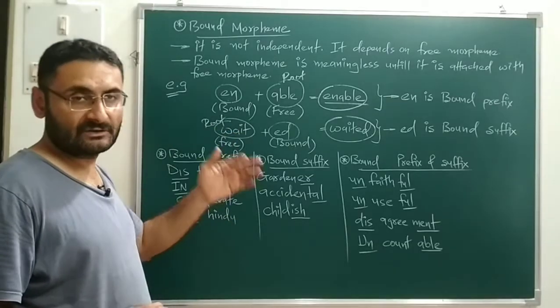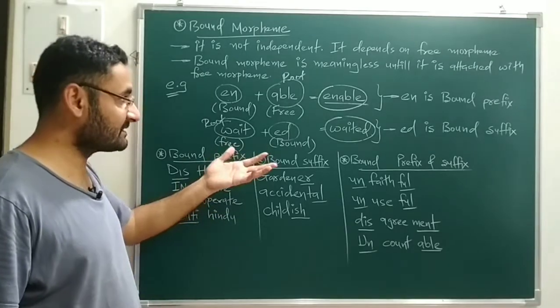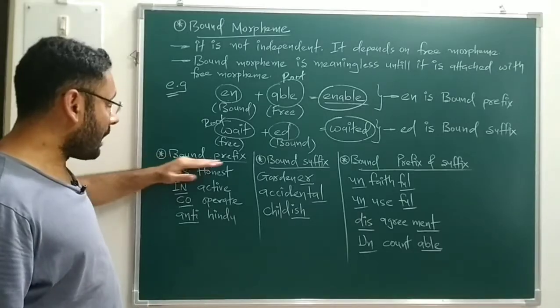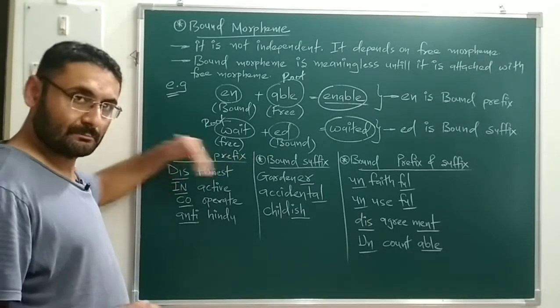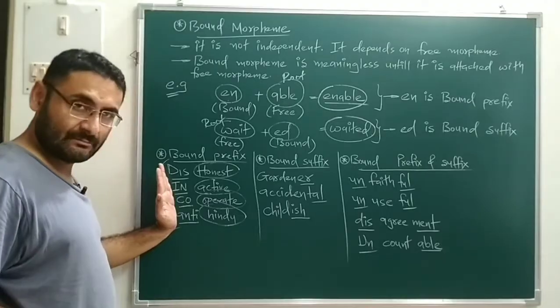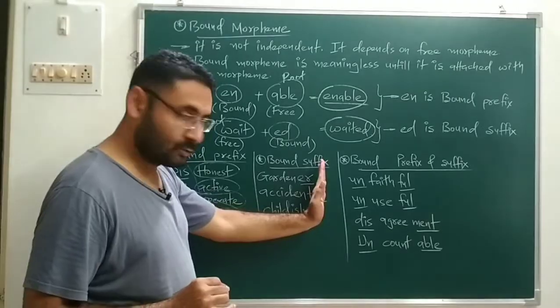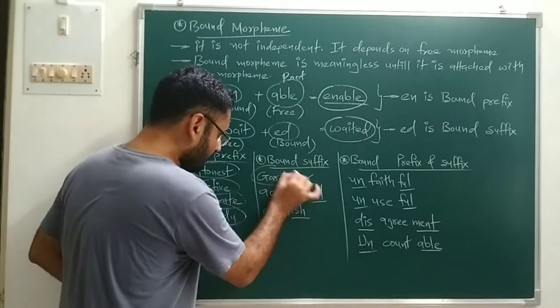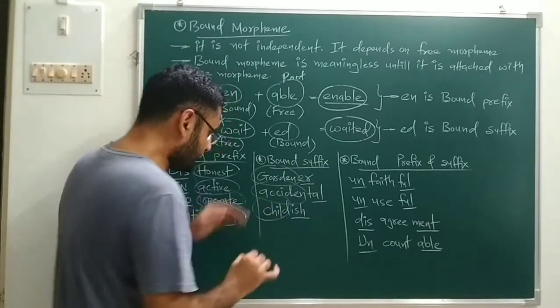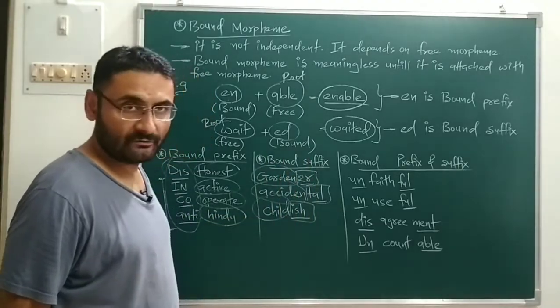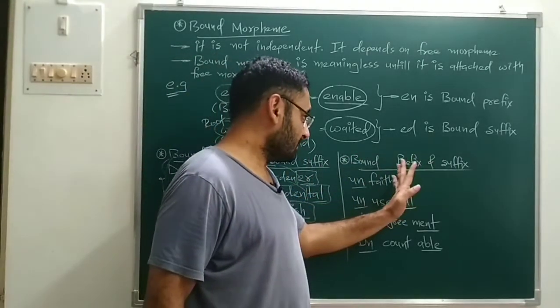Another example: 'rat' is a word — it is a morpheme because it has some meaning. If you divide 'rat' into 'r' plus 'at', you get meaningless remainders. 'r' doesn't have any meaning, so we get meaningless remainders. This is all about the definition of morphemes.